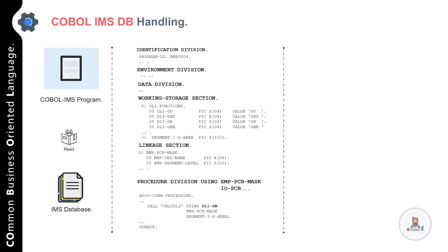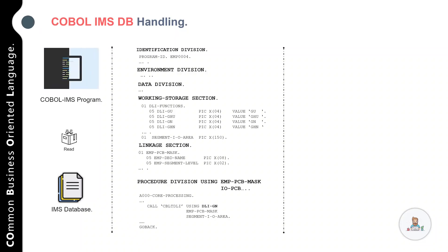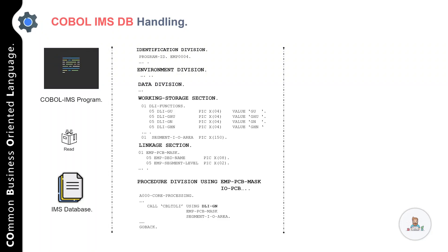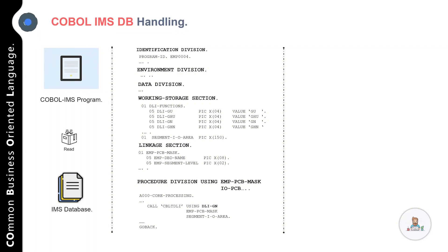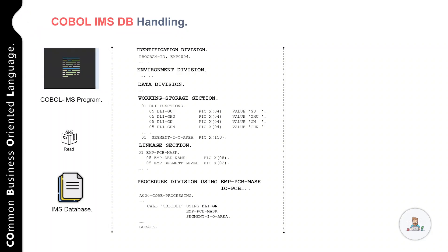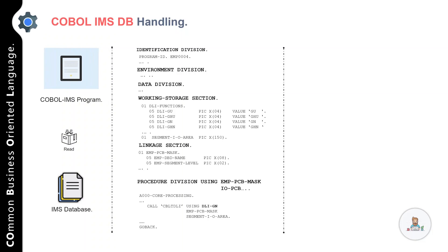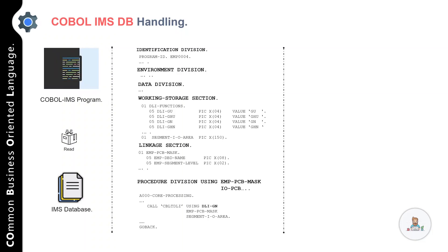In the CALL statement I've used a function variable DLI-GN, which denotes the function Get Next. You can use it to retrieve segment occurrences in sequence — it is like a standard COBOL READ statement.